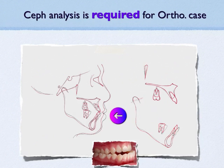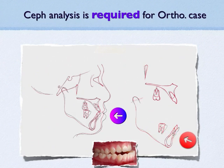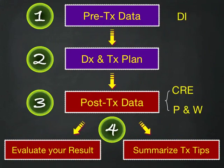In this case, we can see the profile changed significantly. Also, the lower incisor moved back a lot. And here, we not only moved the incisor back, we also extruded it — which is why we corrected both the open bite and the negative overjet.